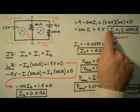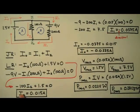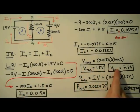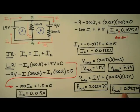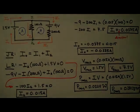And we're done. So there you have it — the current through, the voltage across, and the power dissipated by resistors using Kirchhoff's rules. I'm Jesse Mason. I hope this was helpful to you, and until next time, happy learning.